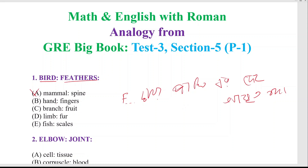Hand has fingers — kintu (but) the hand keeps the fingers; but does not keep them fully separated. Branch has fruit — branching keeps fruit, but does not keep them fully apart either. Limb — limb means onggo (body part), it can be arm, leg, or wing. Far means poshom (feather). We can see that limb covers the full body part — hand, leg — those are fully covered within it.